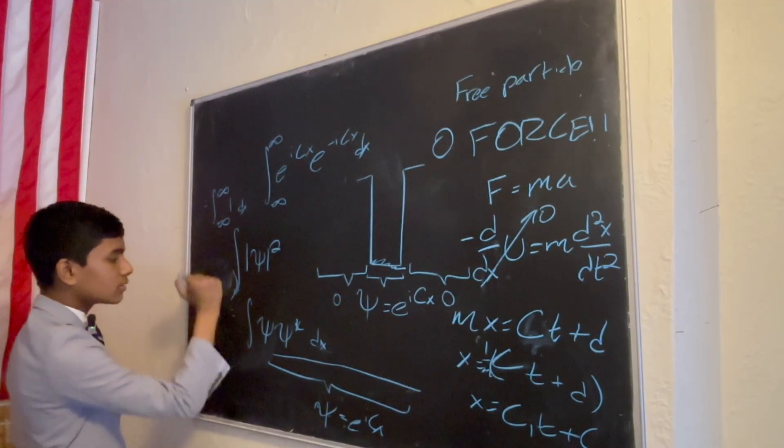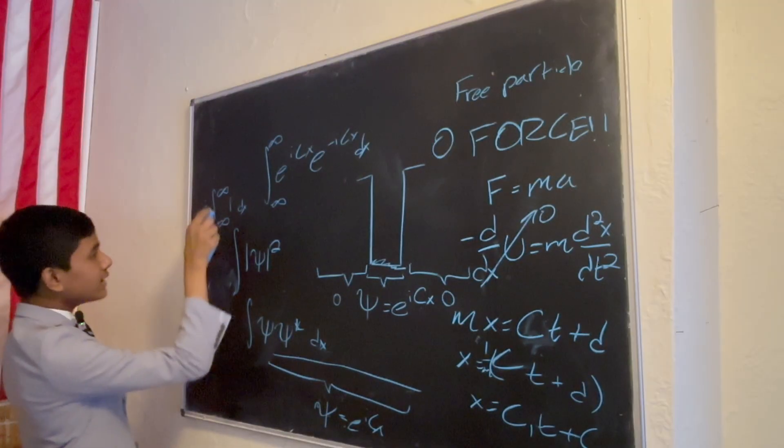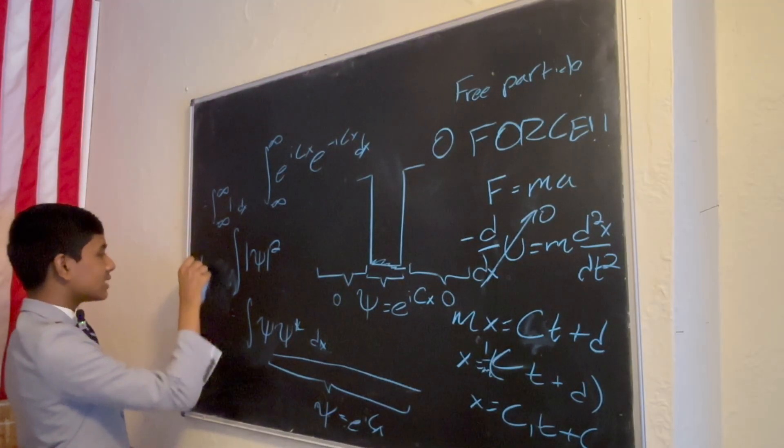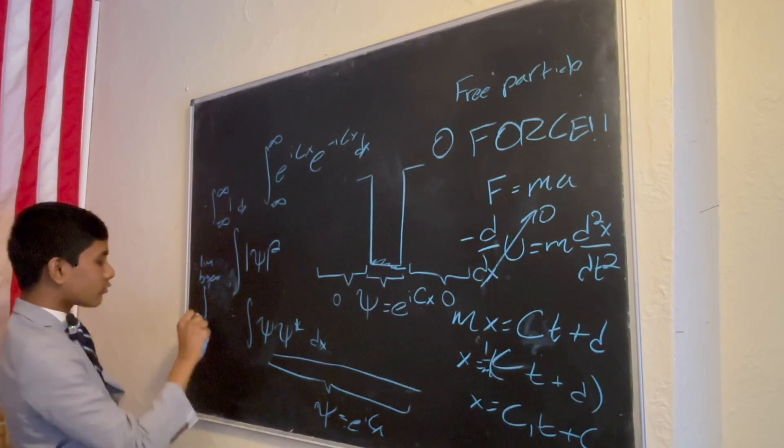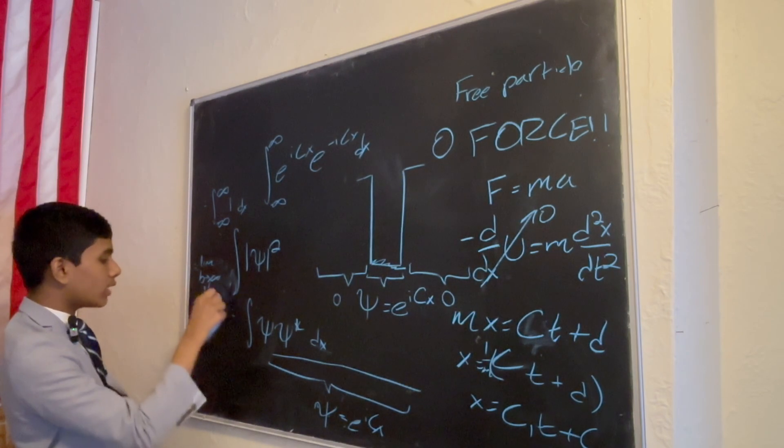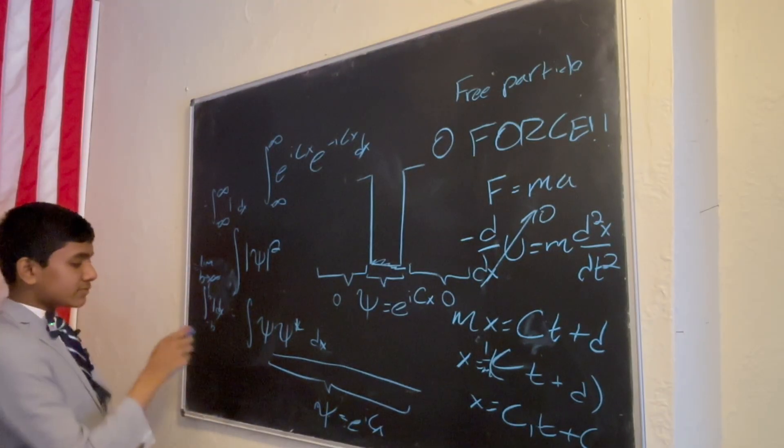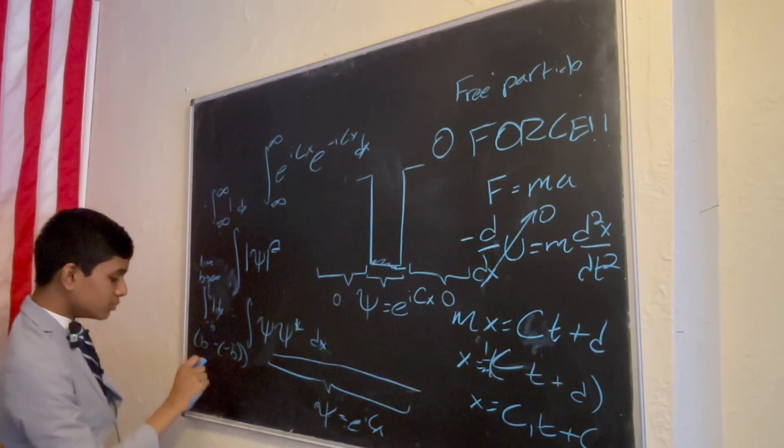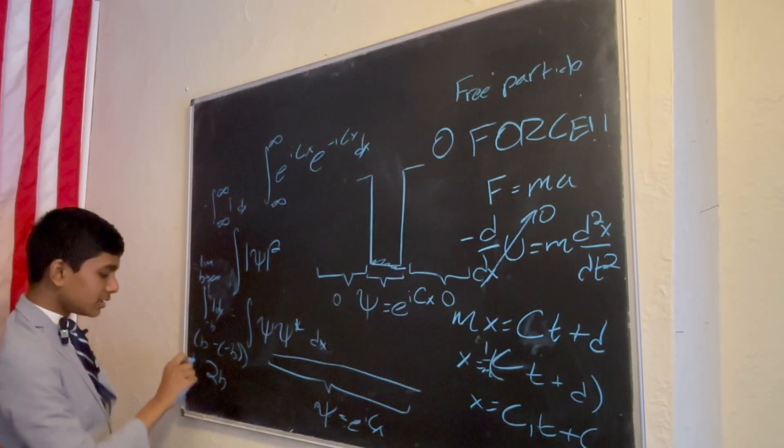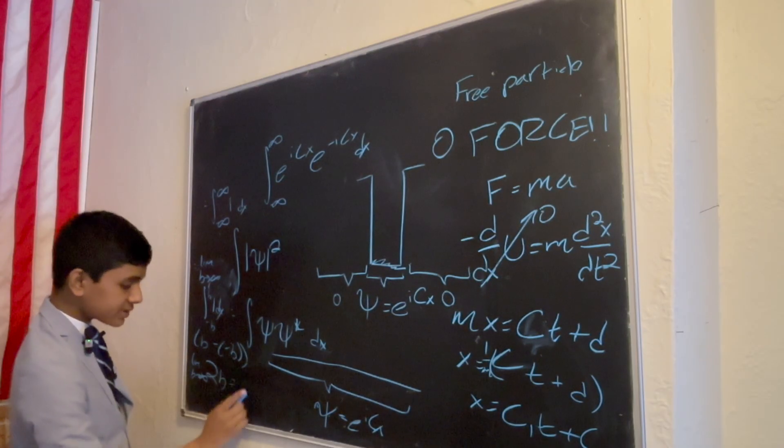Well, at the end of the day, what minus infinity to infinity means is the limit as b approaches infinity for some b of the integral from minus b to b of 1 dx. So, the integral of 1 dx from minus b to b is b minus minus b, which is just 2b. And, the limit as b approaches infinity of 2b diverges.